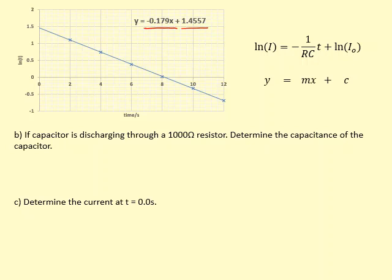If the capacitor is discharging through a 1000Ω resistor, I've been asked to work out the capacitance. So I need to use the gradient there. The gradient is equal to -0.179. And we also know the gradient is equal to -1/RC from this.